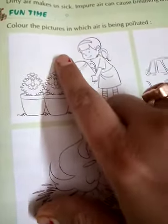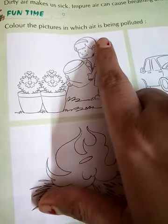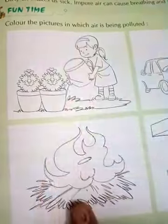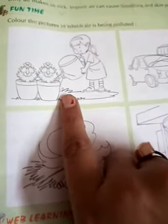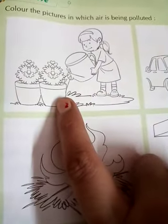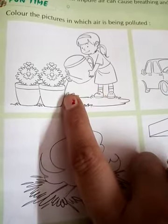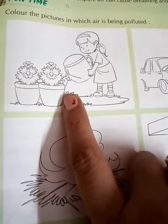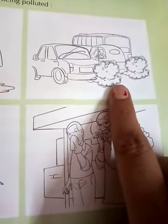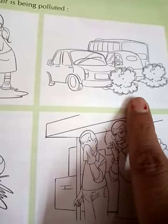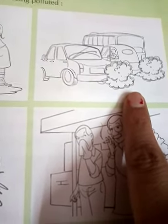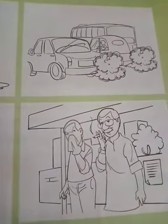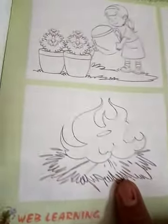In fun time, color the picture in which air is being polluted. Look here — there are four pictures. In the first one, a girl is watering the plants. In the next picture, there is some traffic and air is being polluted, which is affecting the air.